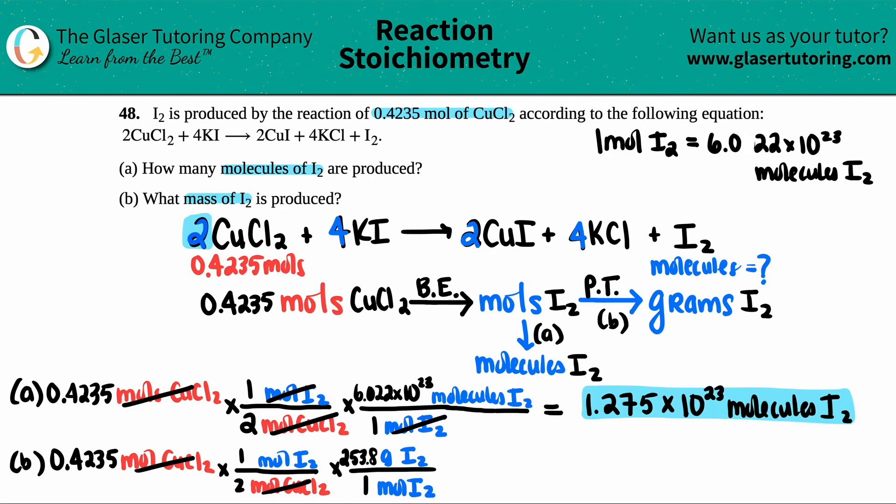And then the units cancel. And that's going to be my answer. So I'm going to do 0.4235 divided by two, because that's in the denominator, and times by 253.8. Keeping with the four sig figs, I get 53.74. And that is now grams of I₂. Cool.